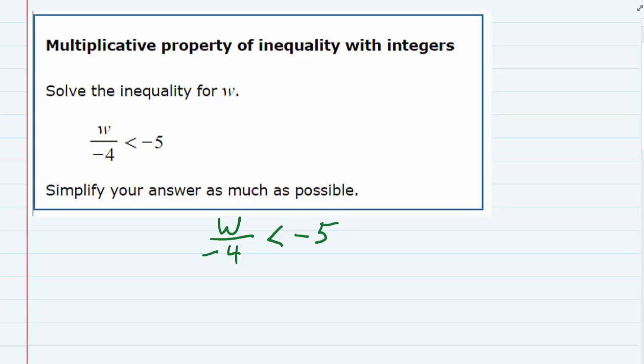So to get the w by itself, I just have to undo dividing by negative 4. And I can undo division with multiplication.